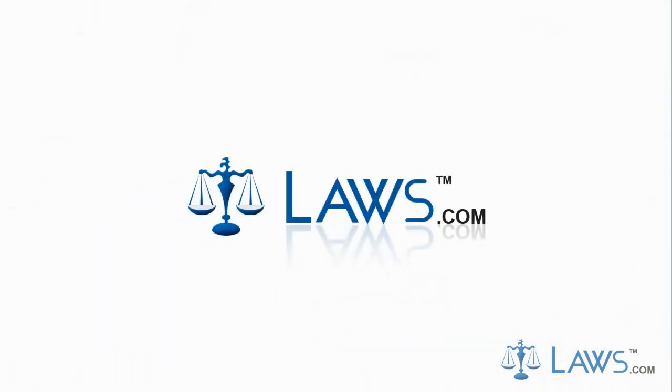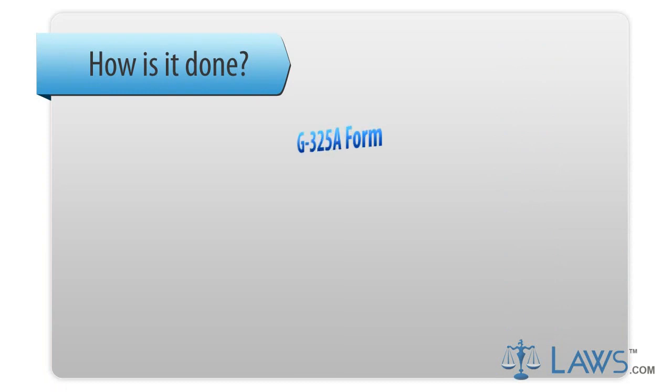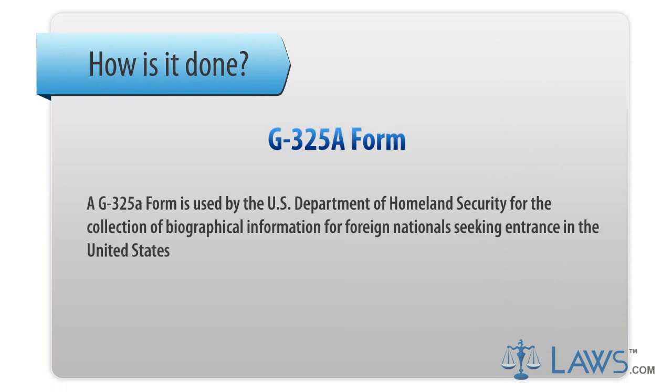Laws.com Legal Forms Guide. A G-325A form is used by the U.S. Department of Homeland Security for the collection of biographical information for foreign nationals seeking entrance in the United States.